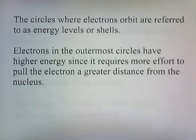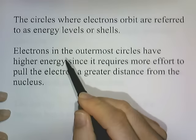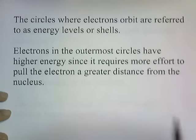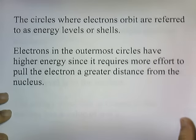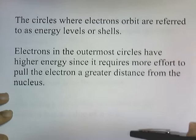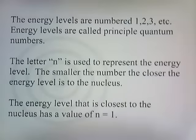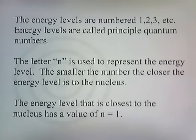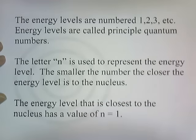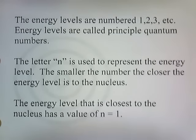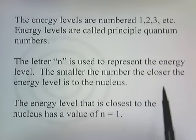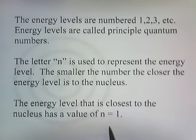The circles where the electrons orbit are referred to as energy levels, or shells. Electrons in the outermost circles have higher energy, since it requires more effort to pull the electron a greater distance from the nucleus. The energy levels are numbered 1, 2, 3, etc. Energy levels are called principal quantum numbers, and the letter N is used to represent the energy level. The smaller the number, the closer the energy level is to the nucleus, and the energy level closest to the nucleus has a value of N equals 1.